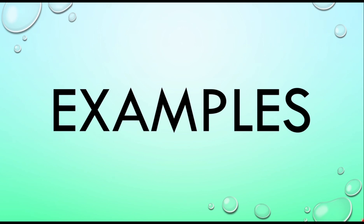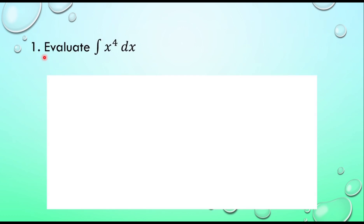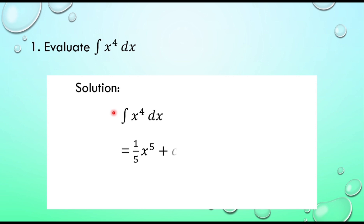Examples. Number one: evaluate the integral of x raised to the power 4 dx. For the solution, we write the given equation: the integral of x raised to the power 4 dx. Then we add the exponent by 1, giving us 1 over 5 times x raised to the power 5 plus C. Simplifying, the result is x raised to the power 5 over 5 plus C.